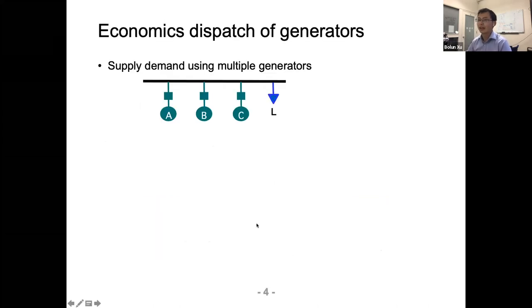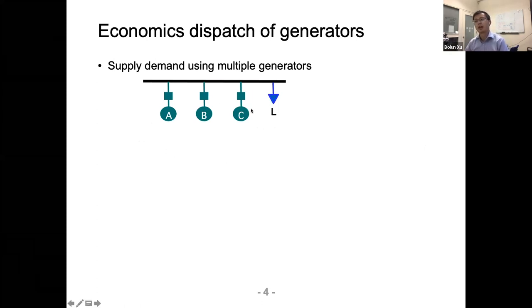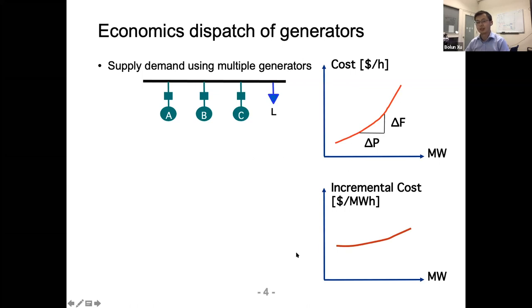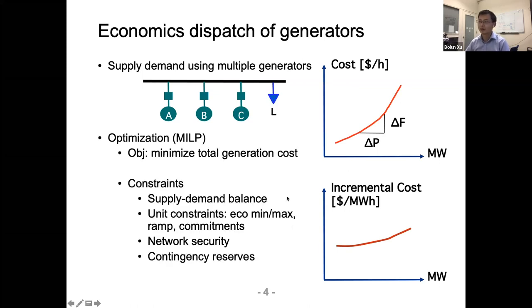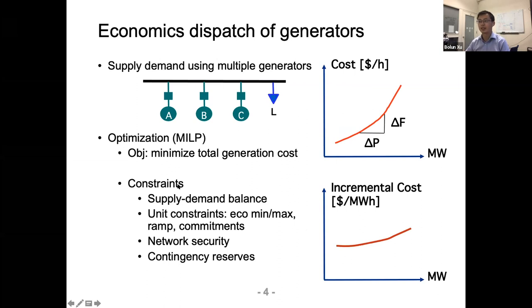Let's review what economics means in power systems. The most basic concept is economic dispatch: figuring out how to use multiple generators to meet demand. Each generator has a cost curve and incremental cost. We formulate this as a linear or mixed-integer linear programming problem — minimize total generation cost subject to supply-demand balance, network security, and other constraints. This is the traditional generator-based dispatch framework.